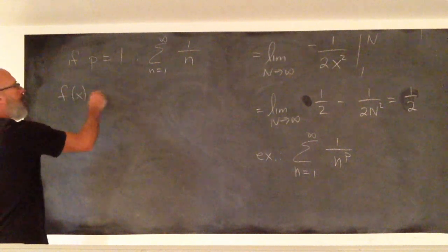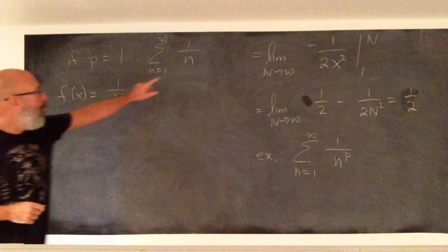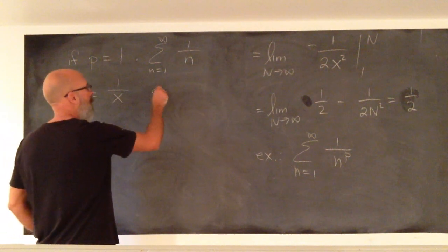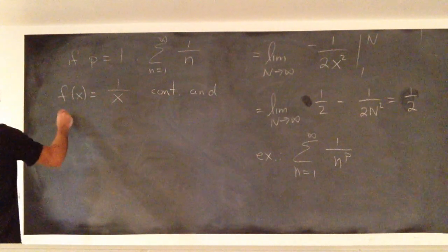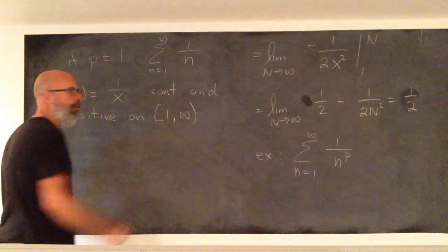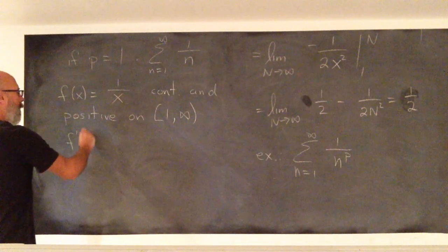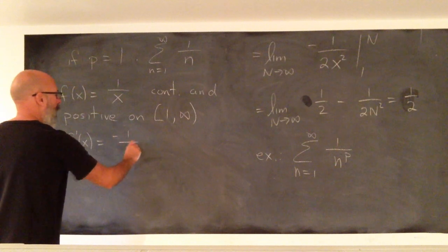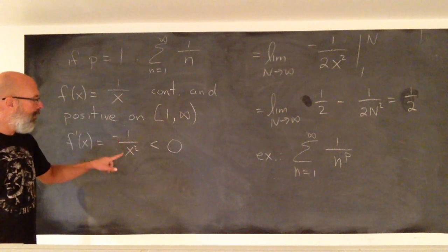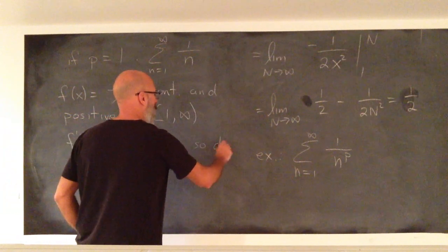The function associated with 1 over n is 1 over x — when x is n, you get exactly 1 over n. So f(x) = 1 over x, which is continuous and positive on the interval 1 to infinity. Taking the derivative gives negative 1 over x squared, easily seen to be less than 0: the numerator is negative, the denominator is positive, so the whole fraction is negative. So the function is decreasing.